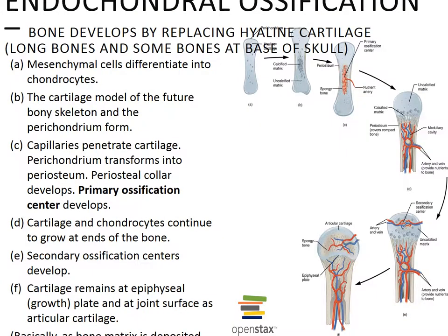The other type of ossification process is endochondral ossification and the steps are shown here. First, there is cavitation of a hyaline shaft. Chondrocytes within the shaft hypertrophy or enlarge as the surrounding matrix begins to calcify. The impermeable matrix causes chondrocytes to die from lack of nutrients, leaving the matrix to deteriorate. Blood vessels grow around the edges of the cartilage and the cells of the perichondrium convert to osteoblasts, forming a superficial layer of bone sometimes called the bony collar.